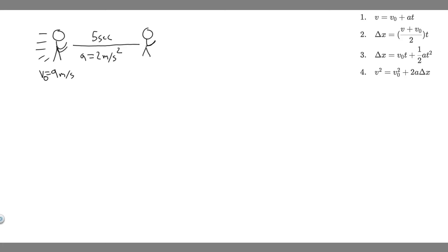In this problem, we're told that at the end of a race, a runner decelerates from a velocity of 9 meters per second at a rate of 2 meters per second squared. A: how far does she travel in the next 5 seconds? B: what is her final velocity? And C: evaluate the result — does it make sense?